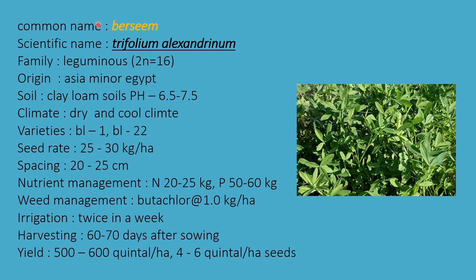The forage crop bersim has scientific name Trifolium alexandrinum, family Leguminaceae. Chromosome number 2n = 16, origin Asia Minor and Egypt. Clay loamy soils are required, pH 6.5 to 7.5. Dry and cool climate is required. Varieties are BL1 and BL22. Seed rate is 25 to 30 kg per hectare, and spacing is 20 to 25 cm.